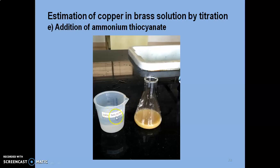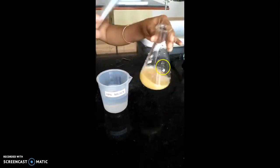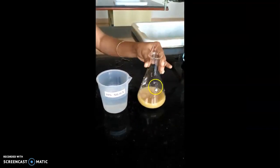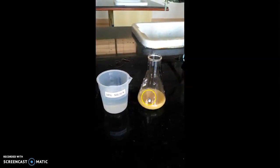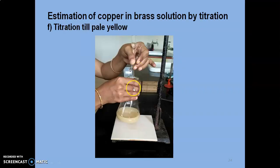Later, ammonium thiocyanate solution has to be added to it. 5 cm3 of ammonium thiocyanate is added. During that time, occluded iodine will be starting to release. Immediately, it has to be titrated with hypo solution.